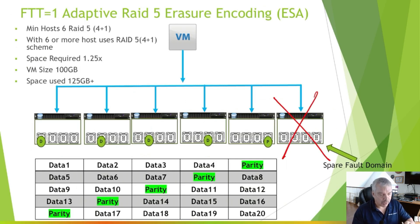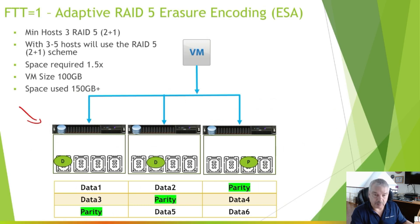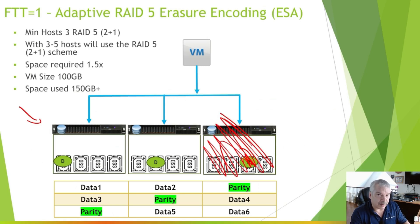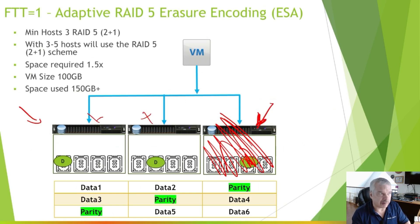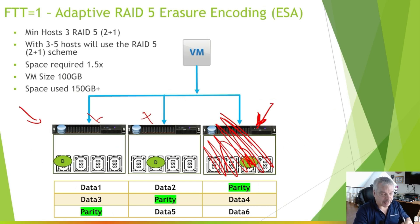Let's talk about why it waits for six hosts — it's about what they call a spare fault domain. With three hosts doing RAID 5, if you lose one host you're still running, but if you lose another one you're dead in the water. Think of it like a hot spare hard drive in a traditional RAID array — it's a good idea to have spare drives sitting there so when there's a failure you can start rebuilding. That's the concept here.